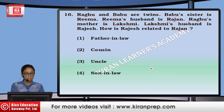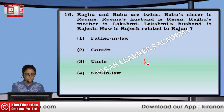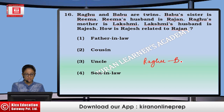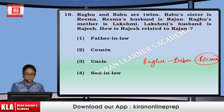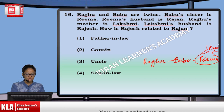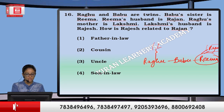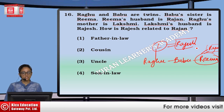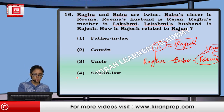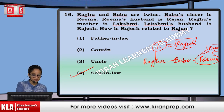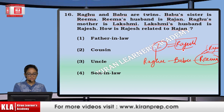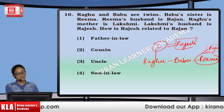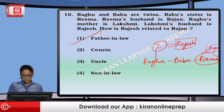Next: Raghu and Babu are twins. Babu's sister is Rima, that means she is Raghu's sister also. Rima's husband is Rajan. Raghu's mother is Lakshmi, and Lakshmi's husband is Rajesh. How is Rajesh related to Rajan? For Rajesh, Rima is daughter, and daughter's husband will be son-in-law. So Rajesh will be father-in-law and Rajan will be son-in-law. That means option number first.